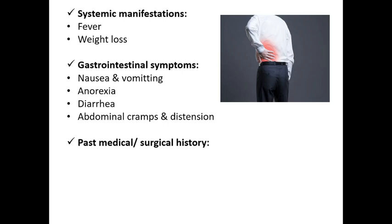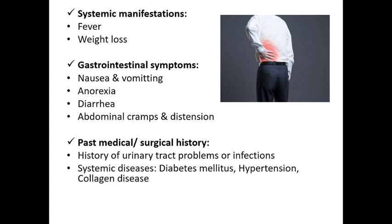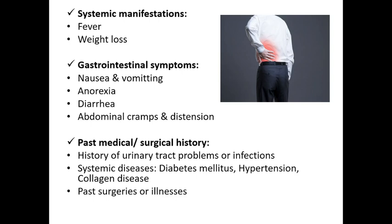You also have to get an idea about the patient's coexisting illnesses as well as the past history of any medical or surgical conditions. This includes history of urinary tract problems or infections, other systemic illnesses such as diabetes mellitus and hypertension, any past surgeries the patient has undergone, and history of any trauma to the pelvic region or accidents that could have potentially damaged the genitourinary organs.